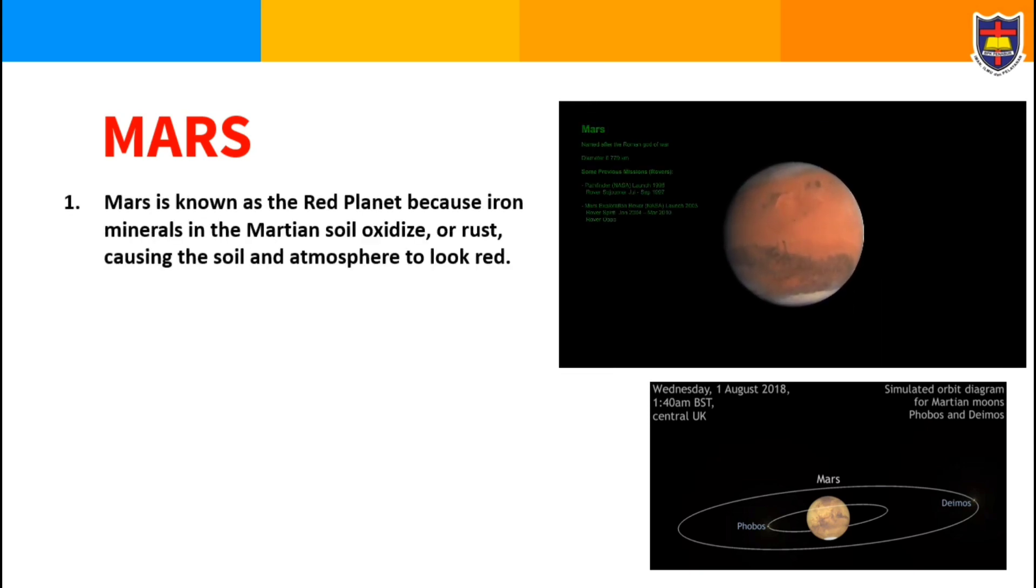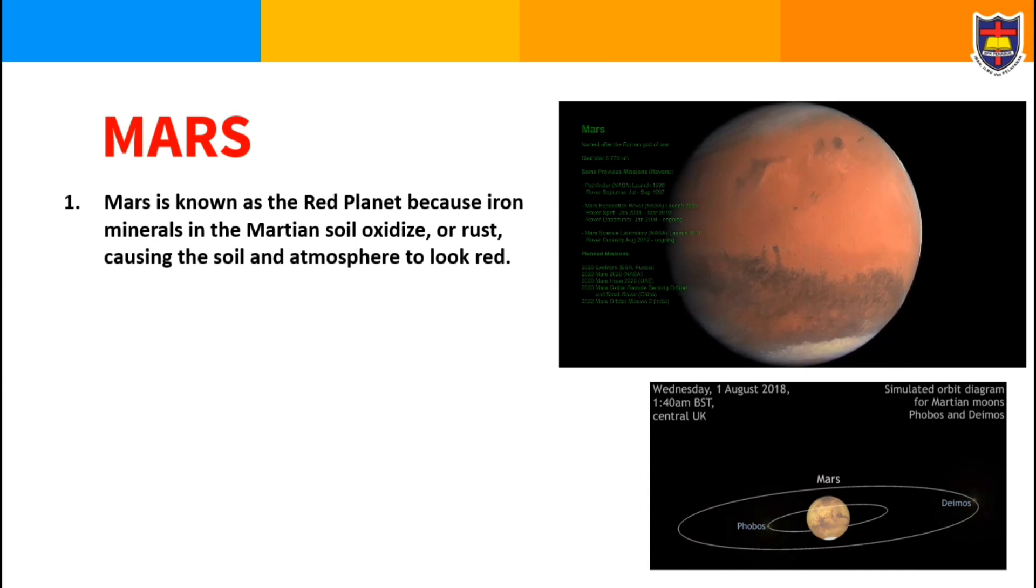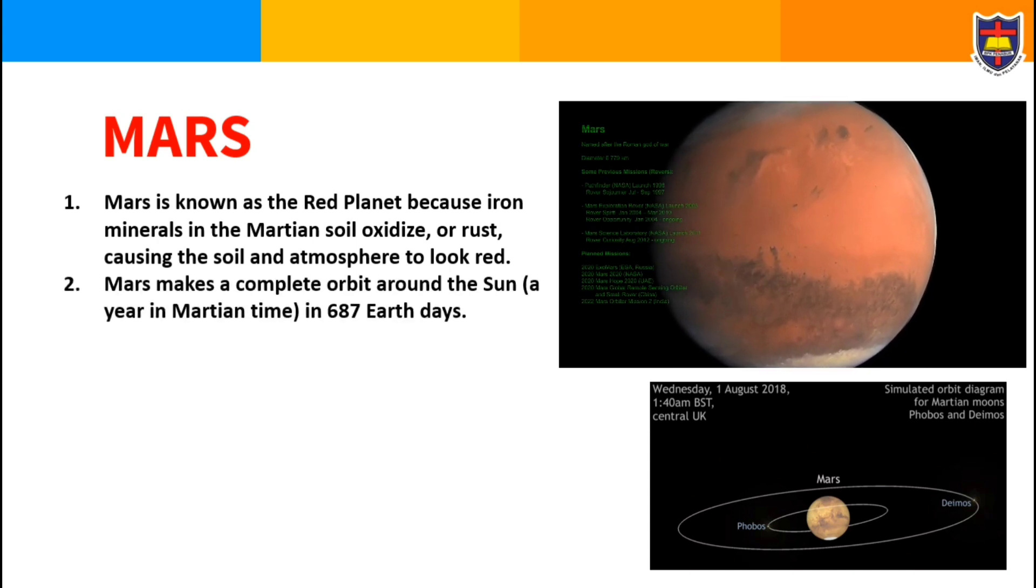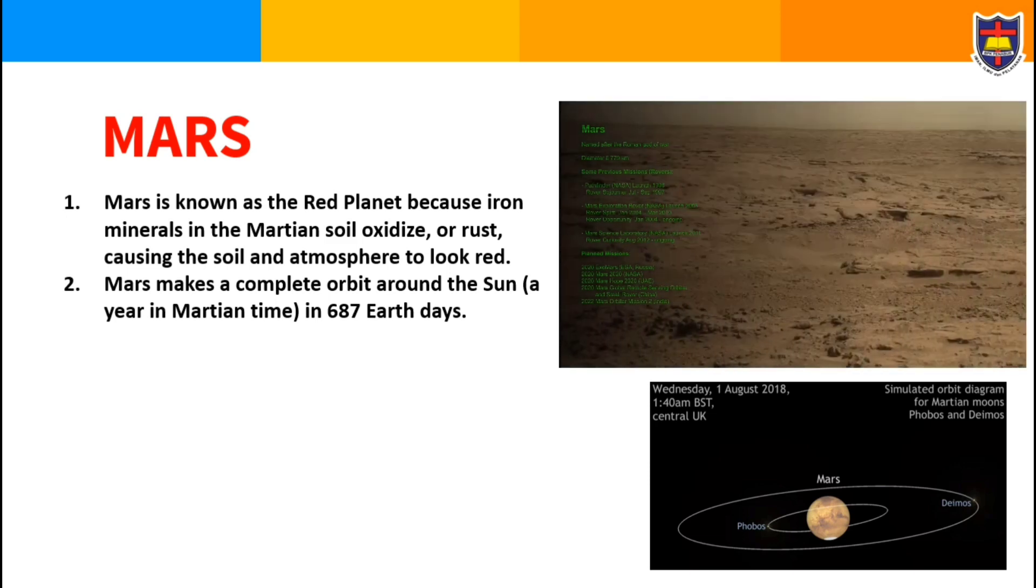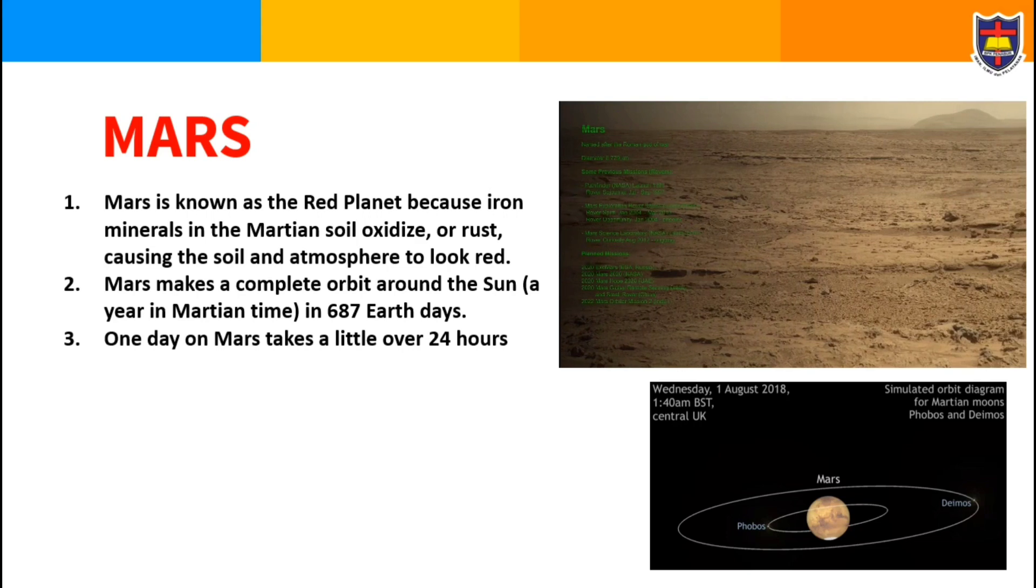The next planet is Mars. Mars is known as the red planet because iron minerals in the Martian soil oxidize or rust, causing the soil and atmosphere to look red. Mars makes a complete orbit around the Sun in 687 Earth days. One day on Mars takes a little over 24 hours.